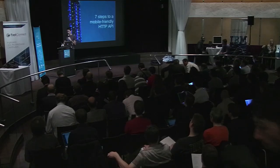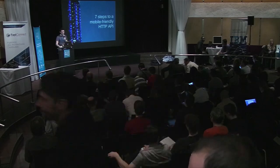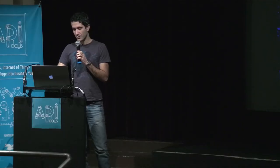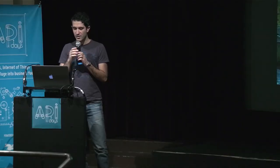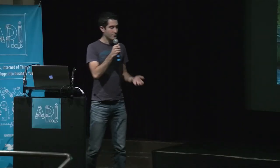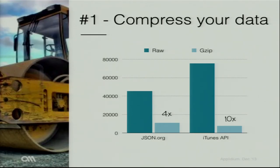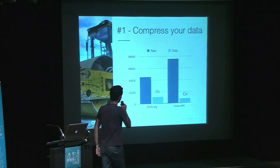Step one is pretty basic, but many people don't do it. You have to compress your data. It's just as simple as this: if you don't zip your content, it will be like ten times bigger, which means ten times slower for a mobile device.